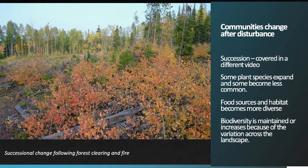Another important aspect of disturbance is the change that occurs after the disturbance comes through the community. Succession is a predictable change in vegetation that occurs after a disturbance. After a disturbance, some plant species become more common and others less common, and that process is important to maintaining biodiversity in both plant and animal communities. In the photo here you see a relatively diverse community that includes aspen, pine, grass, and shrubs — more diverse than the mature pine forest that might otherwise occur on that site.